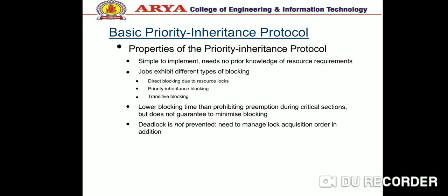Properties of Priority Inheritance Protocol: it does not prevent deadlock. A task can be blocked directly by a task with a lower priority at most once, for the duration of a critical section. Each lower priority task can directly block a higher priority task at most once. A task outside a critical section cannot directly block a higher priority task.